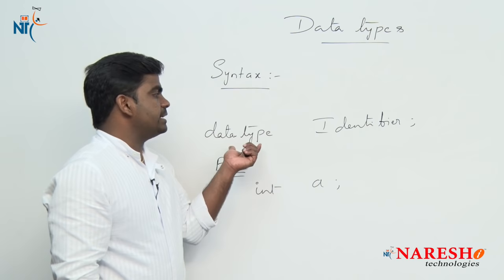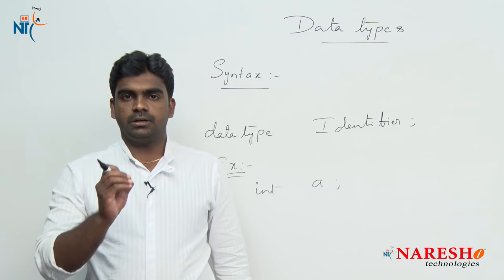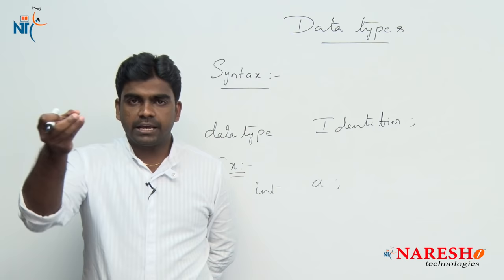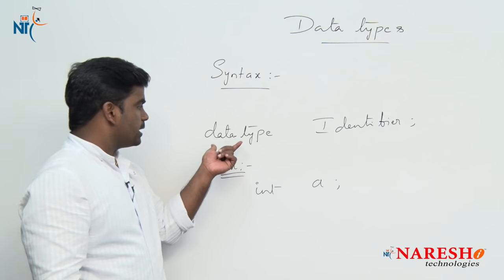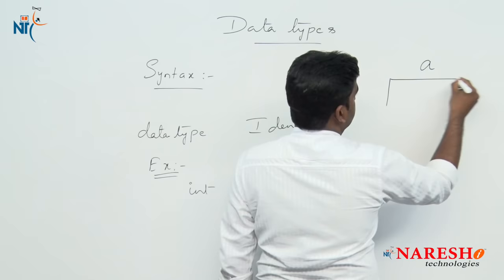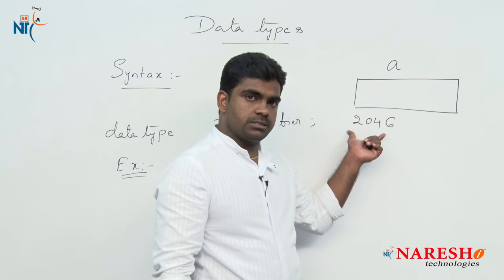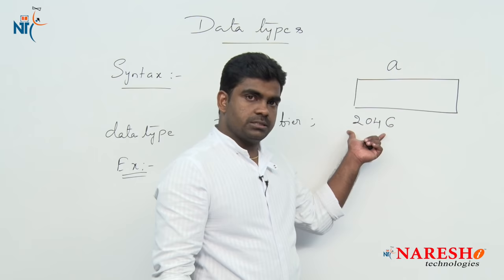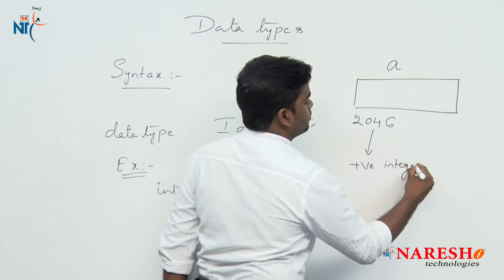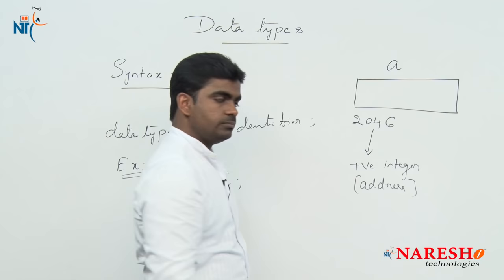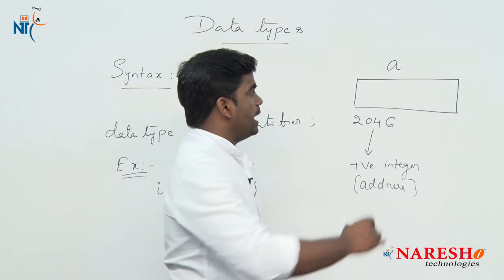What is a data type? It is a representation of data — specifically, how much memory is required to allocate and what type of data is allowed to store. Suppose we declare a variable 'a' of integer type; it gets memory allocation at some address, which is a positive integer value. Generally, an integer occupies 2 bytes of memory.